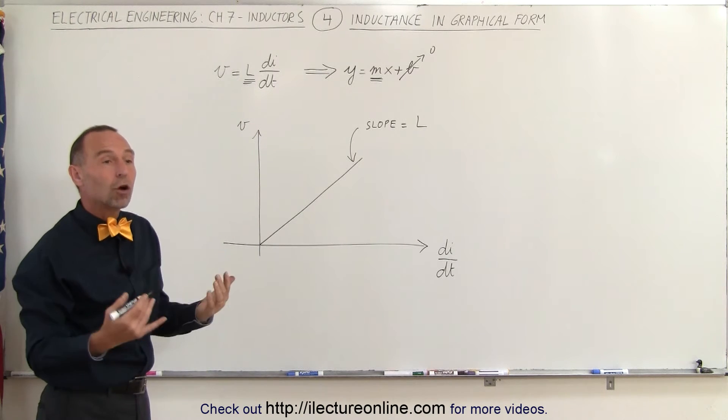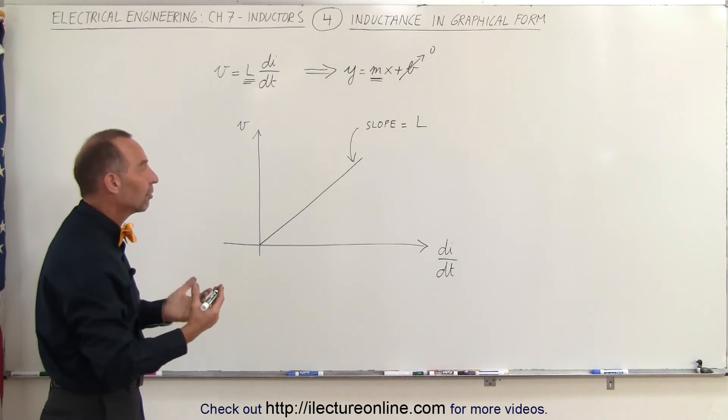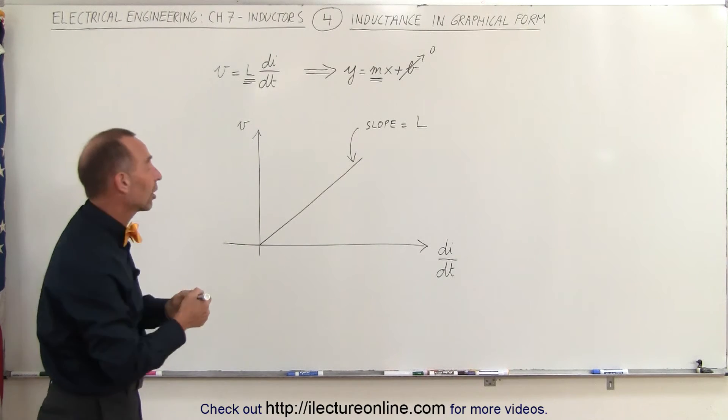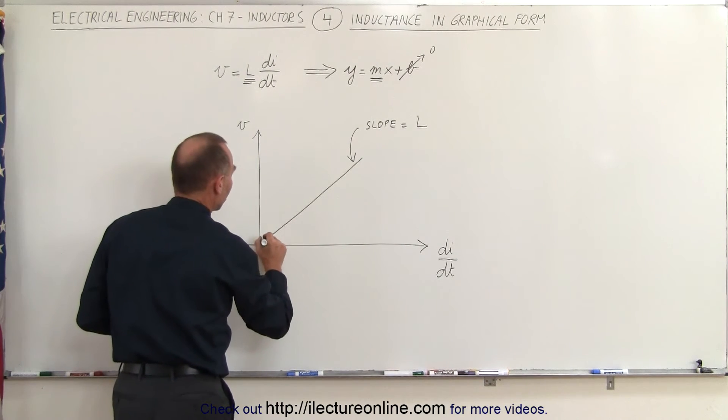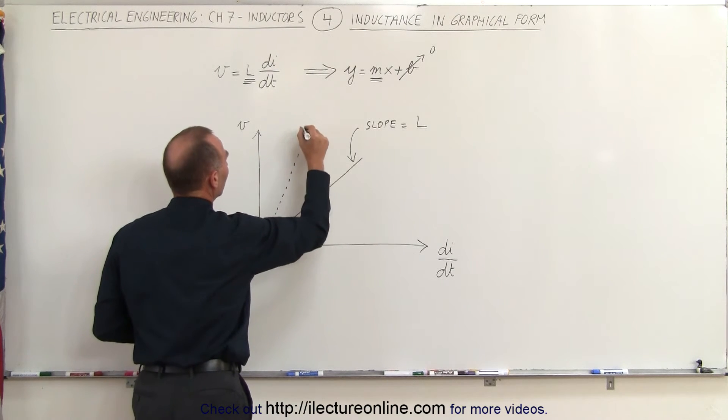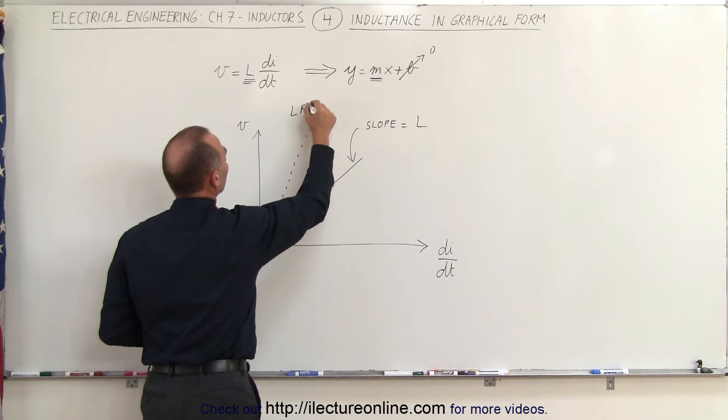Now, if the inductance is large, in other words, if the physical properties of the inductor are such that you have a large inductance, then you would have a slope that looks like this. You would have a steeper slope. So this is a larger inductance.